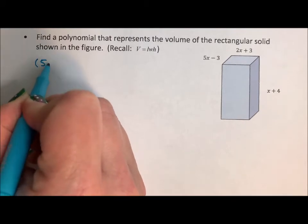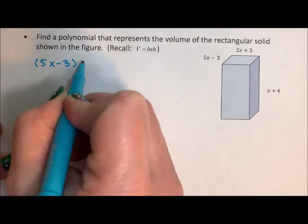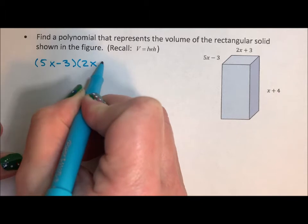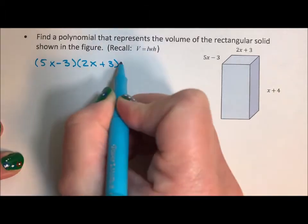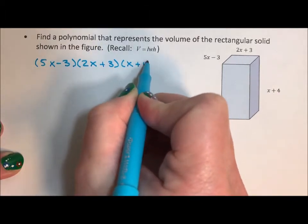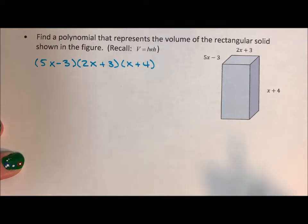So I have 5x minus 3 times 2x plus 3 times x plus 4. I just need to multiply them all together.